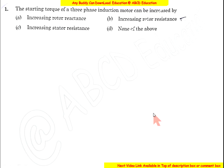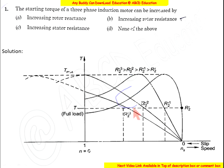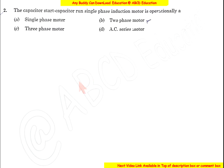Question 1: The starting torque of a three-phase induction motor can be increased by increasing rotor resistance. From the torque-speed characteristics, if resistance R2 is increased from R2 to R2_1, the starting torque increases. Increasing further from R2_1 to R2_2 increases the starting torque further. So the correct option is B: rotor resistance.